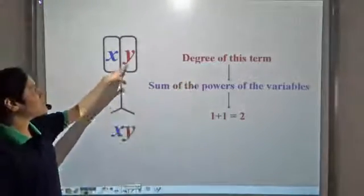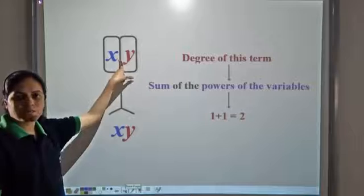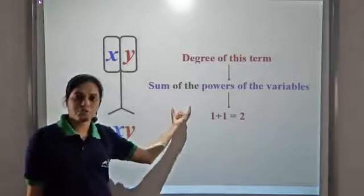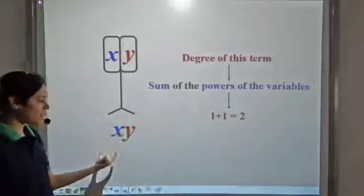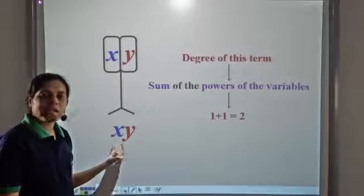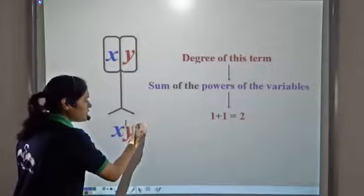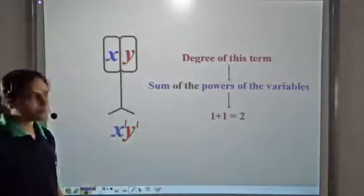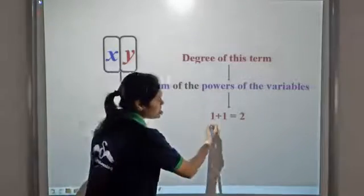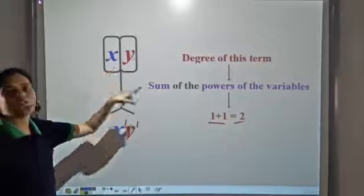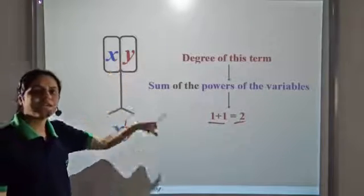So we can say that the degree of this term, which is xy, is the sum of the powers of individual variables. What are the variables? The variables are x and y. The power of x is 1. The power of y is 1. So the sum of their powers is 1 plus 1, which is 2. So the degree of this term xy is 2.